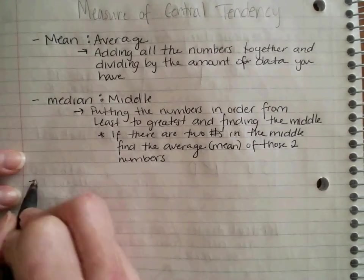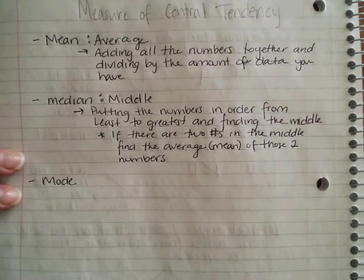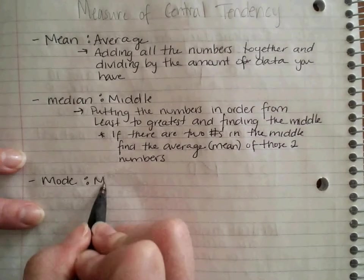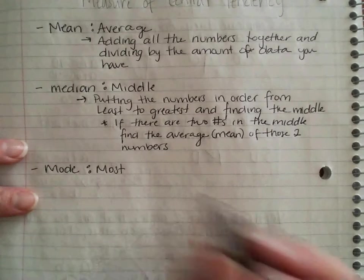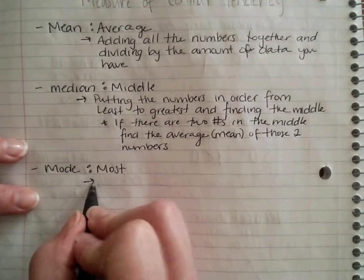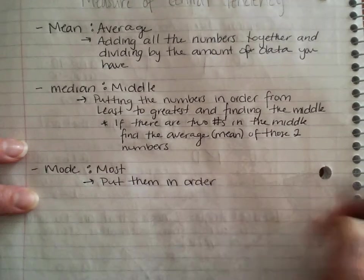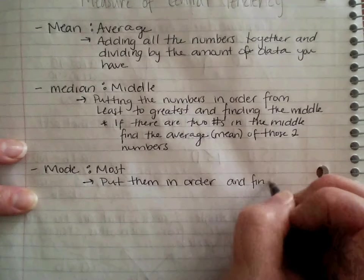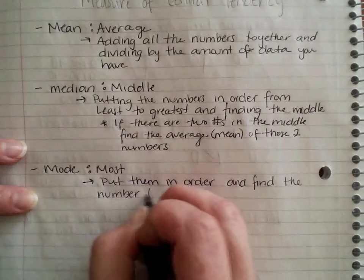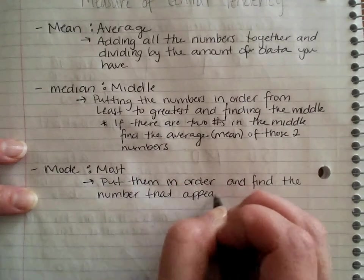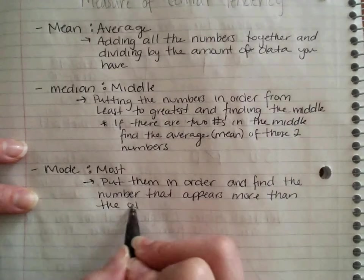The next one that we're going to talk about is mode. Mode is kind of easy. Mode means most. Both of them start with M-O. Mode, most. Which number appears most often? So you've got to put them in order and find the number that appears more than the others.